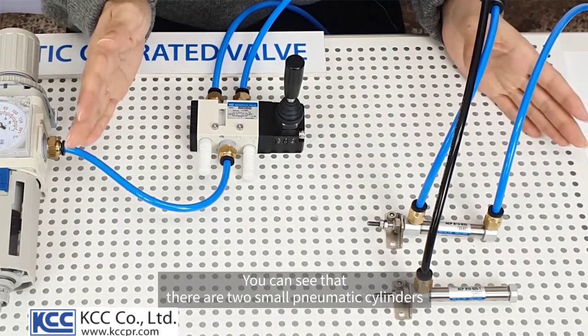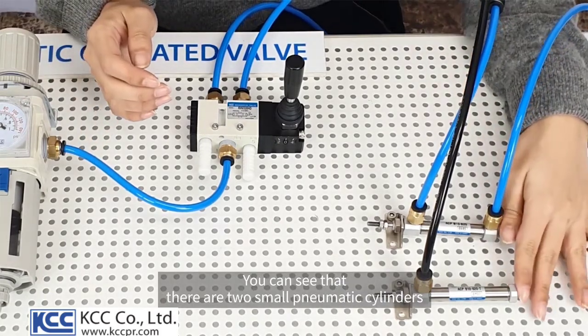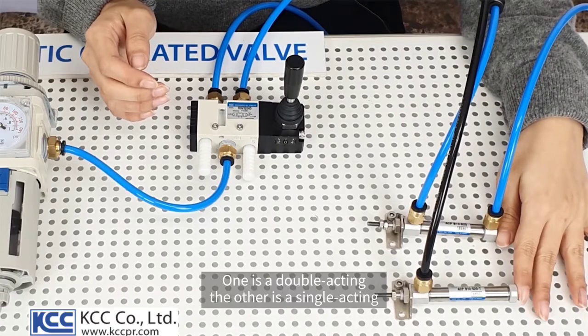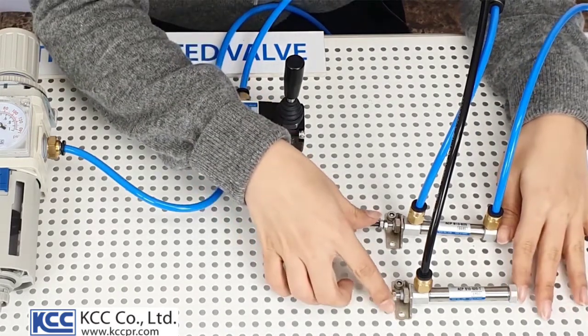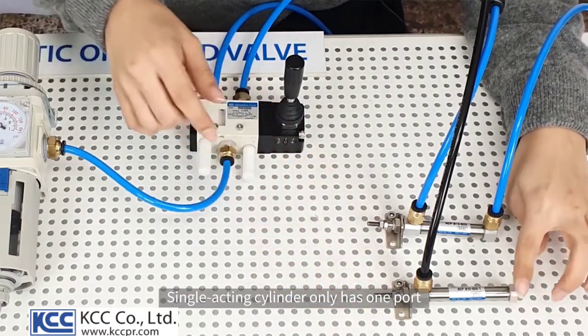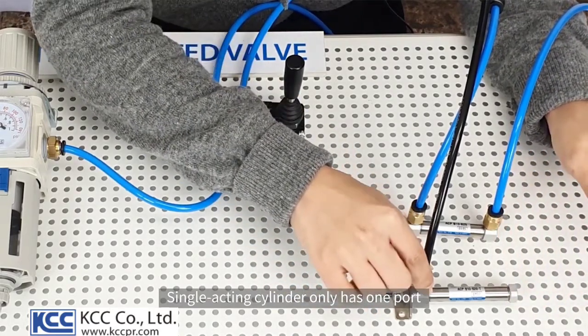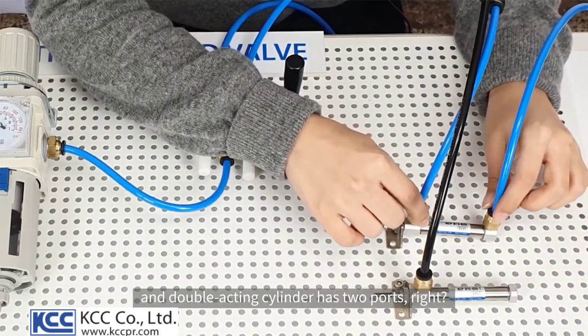You can see that there are two small pneumatic cylinders. One is a double-acting, the other is a single-acting. Can you see the difference? Single-acting cylinder only has one port, and double-acting cylinder has two ports, right?